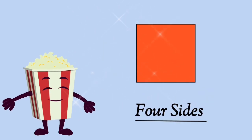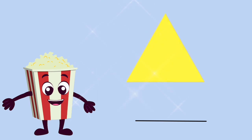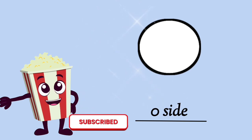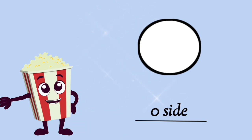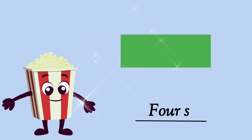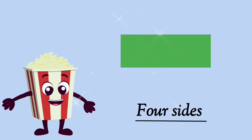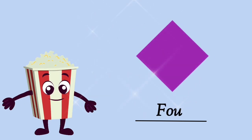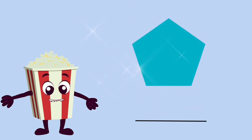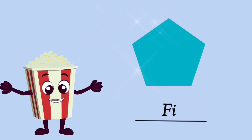A square has 4 sides. A triangle has 3 sides. A circle has 0 sides but has 1 curved line. A rectangle has 4 sides. A rhombus has 4 sides.